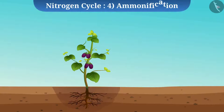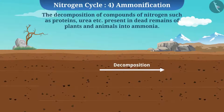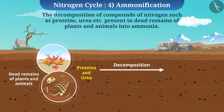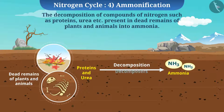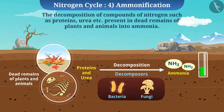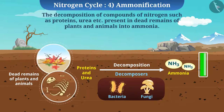The next stage is ammonification. The decomposition of nitrogen compounds such as proteins and urea present in dead remains of plants and animals into ammonia is called ammonification. It is carried out by decomposers such as bacteria and fungi. This process increases the concentration of ammonia in the soil and also helps in cleaning the environment naturally by decomposing organic matter.